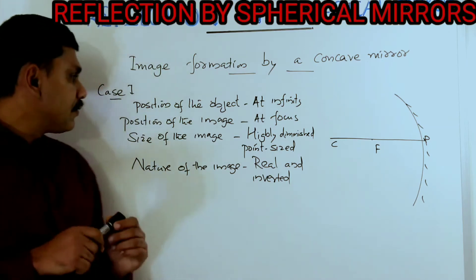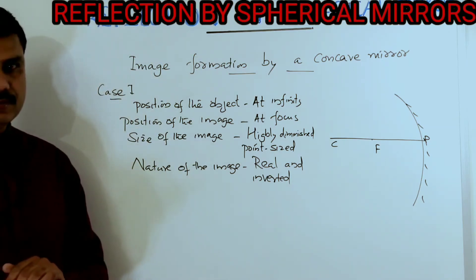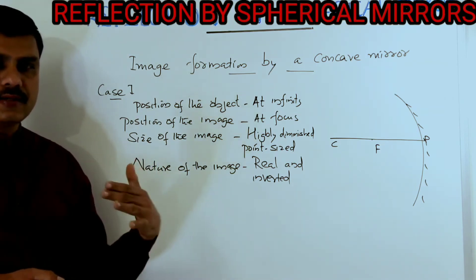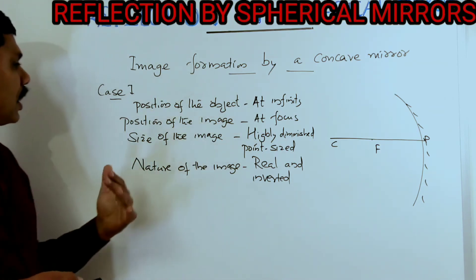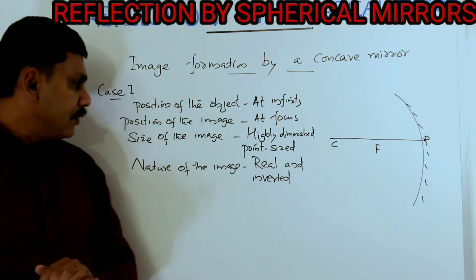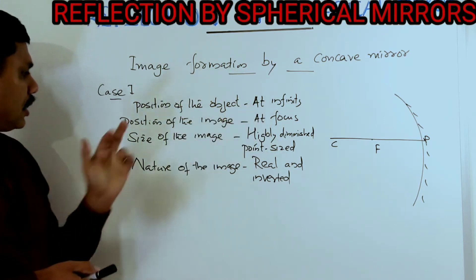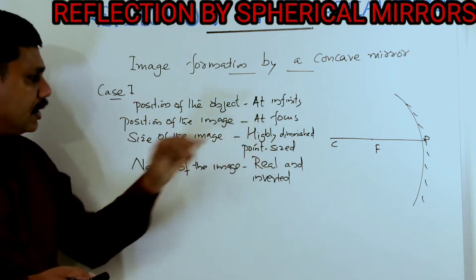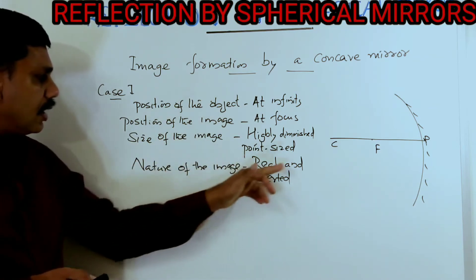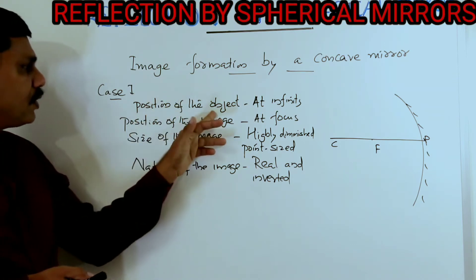There are six cases for the concave mirror — six different types of images formed. Case one: position of the object is at infinity, position of the image is at the focus, size of the image is highly diminished or point-sized, and the nature of the image is real and inverted.